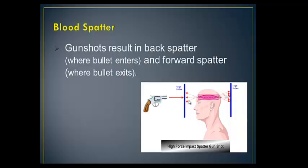One thing that a gunshot will do — hopefully this isn't too graphic. If the bullet is entering whatever object, the body, obviously the direction of the force, there's a lot more of the misting that would apply. There's going to be also some back spatter where it may contact with the object. It's not as great, but it does tell you the direction that the bullet entered into the body.